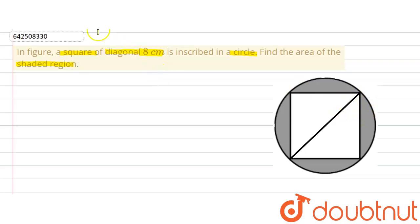So there is a square and the diagonal of the square is given. The length of the diagonal of the square is 8 cm, and we are asked to find out the area of this shaded portion.